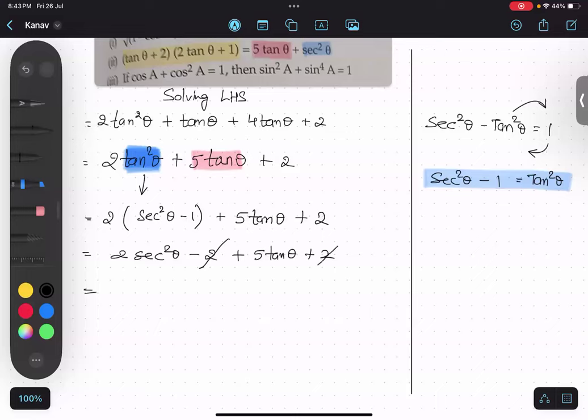So what I'm going to get: 5 tan θ and plus 2 sec θ. So I'm getting 2 sec θ. How is it possible I'm getting 2 sec θ?